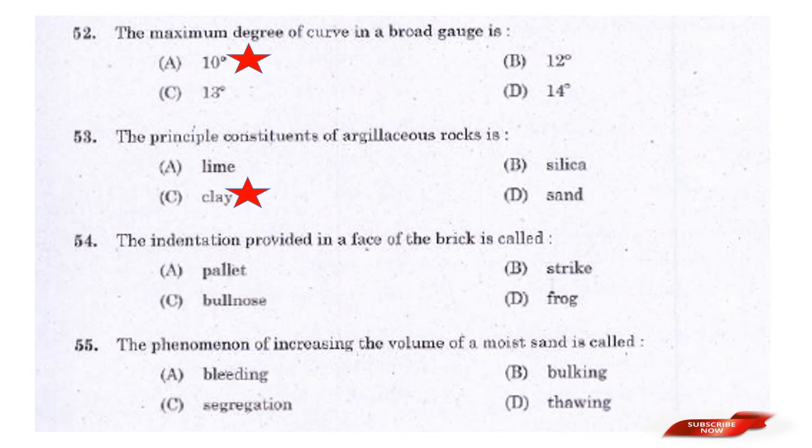Question: The indentation provided in the face of a brick is called — options: Pellet, Bullnose, Frog. Answer: Option D — Frog. The indentation provided in the face of a brick is called Frog.